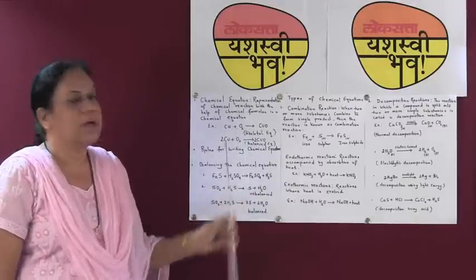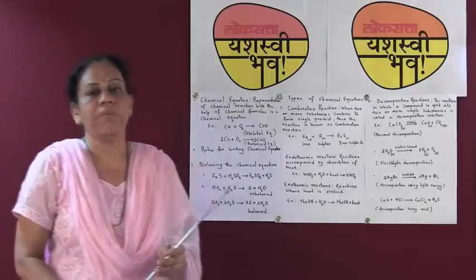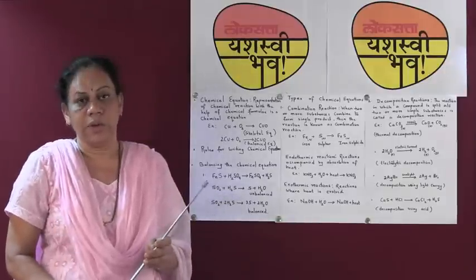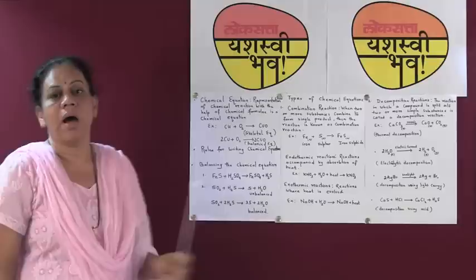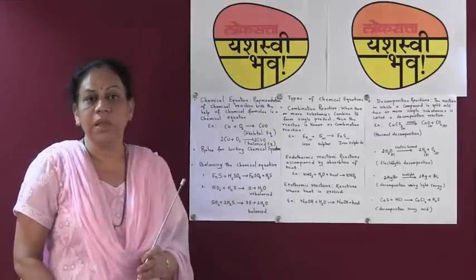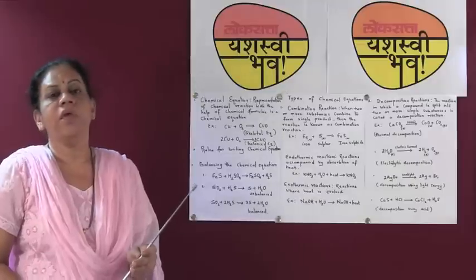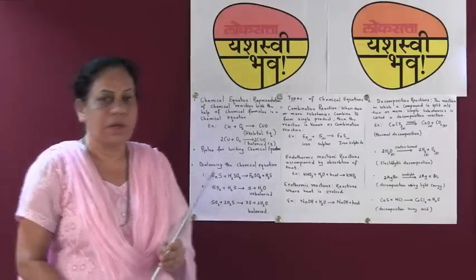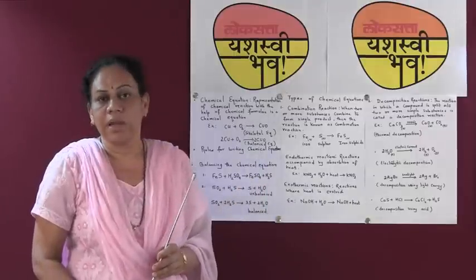If there is any additional information regarding the chemical equation, it can be written on the arrow mark in between. For example, if we have to specify the temperature, the use of a catalyst, or the pressure, we can write it above the arrow mark.